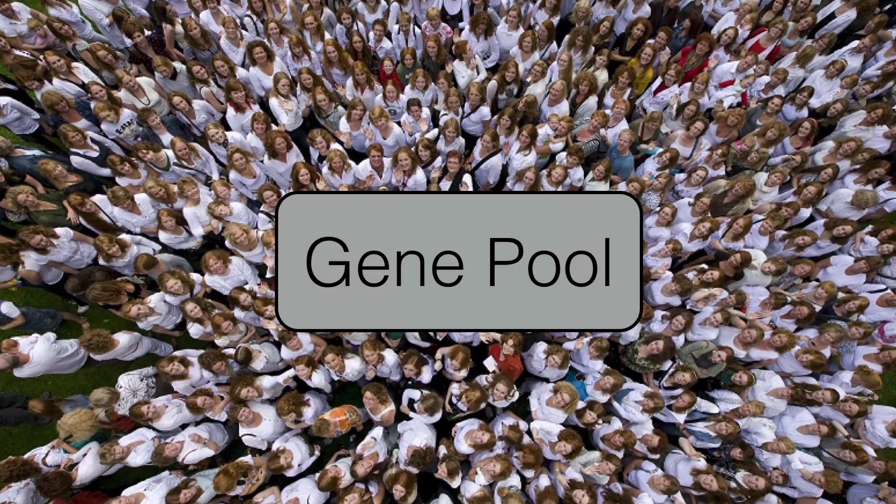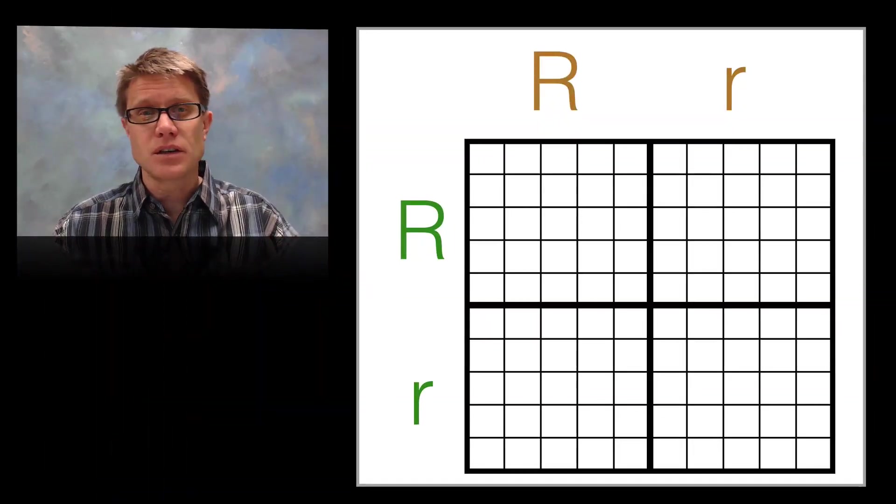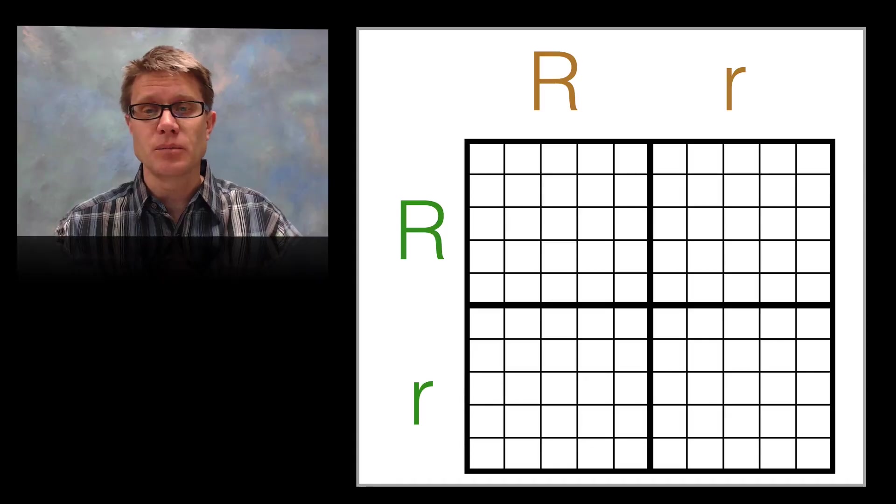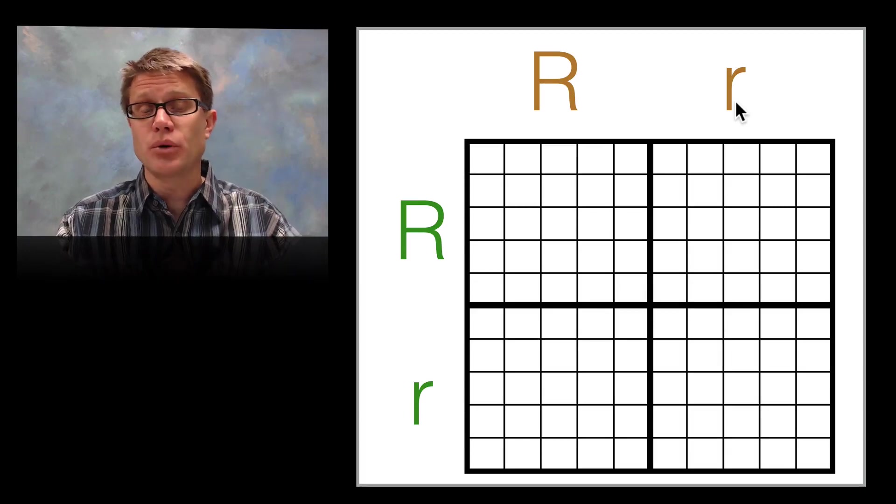But what if we could apply this to a whole gene pool over a long period of time? We're going to need a different model. And so this is this Hardy-Weinberg or population Punnett square. What do we have on the top? This is going to be the two genes that could be drawn from the gene pool itself.